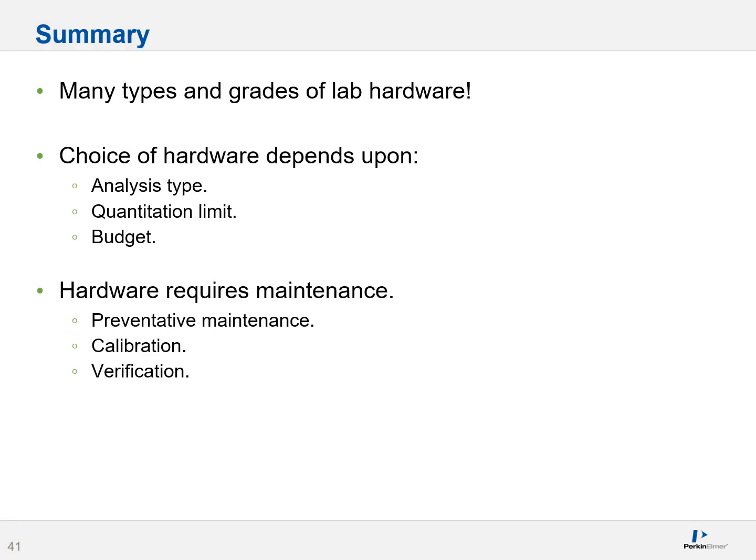In summary, there are many types and grades of lab hardware. The choice of hardware ultimately depends upon your analysis type, your quantitation limit, and of course the budget. Please keep in mind that hardware requires maintenance — sometimes preventative maintenance on a yearly or every six-month basis, and sometimes calibration or periodic verification. When setting up your lab, spend some time thinking about your analysis, and read other protocols and methods that may exist — odds are there's already a source of material available.